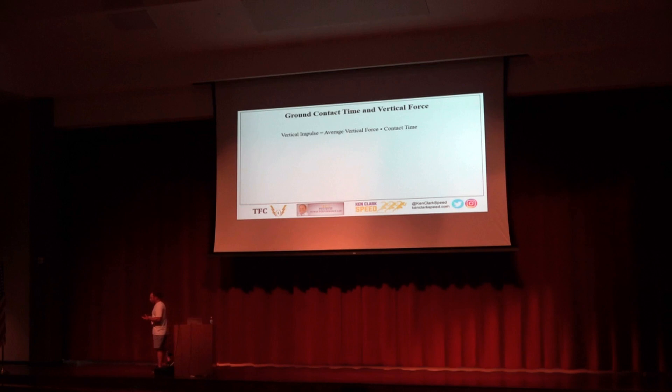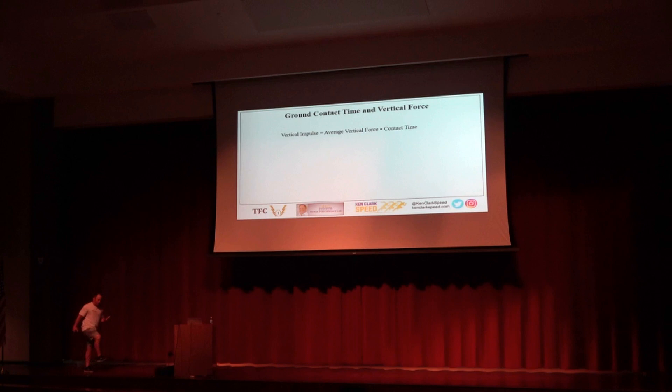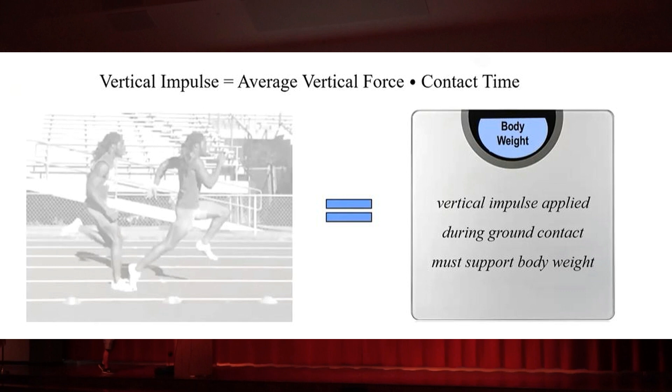Every step you sprint, from acceleration all the way through the end of 100 meters or 200 meters or whatever, you need to apply enough vertical impulse. Impulse is the product of force and time — force applied for a period of time. You need to apply enough vertical impulse to support your body weight so you don't crash, and to lift your center of mass into the next step, over the course of a contact and a flight time.